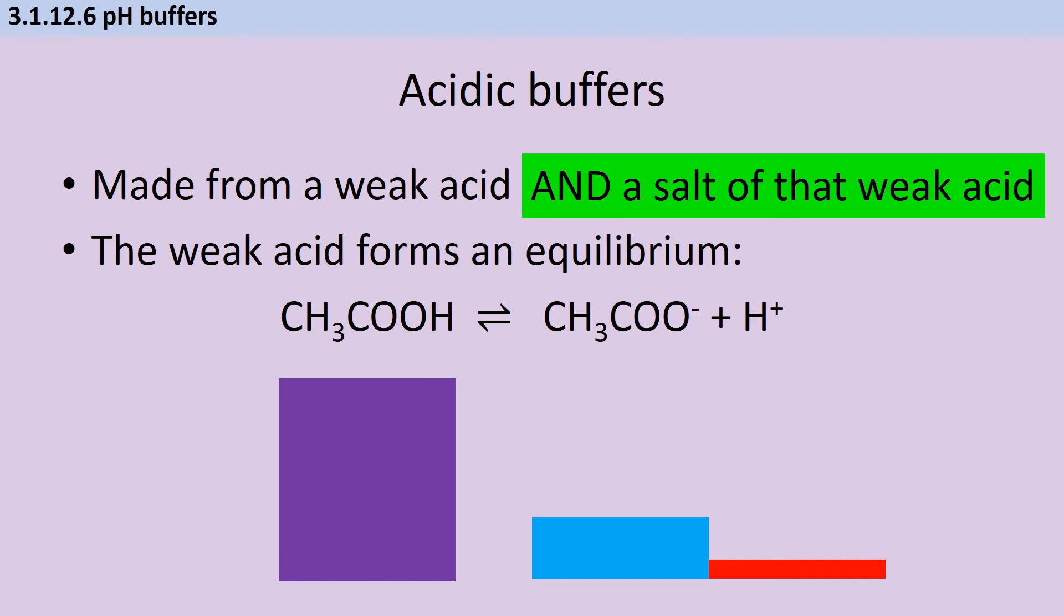You can see here I've added some extra ethanoate ions to my equilibrium, and there are two ways that I can do this. The first one is that I take my weak acid solution and I add a salt that contains the same anion. For instance, here I could use sodium ethanoate or potassium ethanoate, and I could either do that by adding the solid salt or I could do it by mixing my ethanoic acid with a solution of sodium ethanoate or potassium ethanoate.